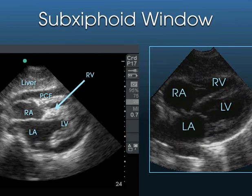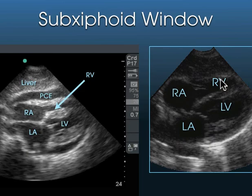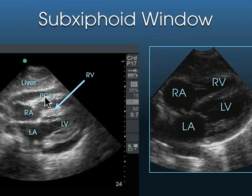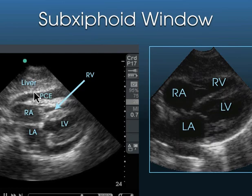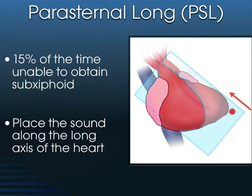In the sub-xiphoid view, here's the liver, and then we can see the right ventricle and then the left ventricle. Here's the right atrium and here's the left atrium. The right side of the heart is closer to the liver, whereas the left side is further down into the body. A pericardial effusion is seen as a separation between the anterior pericardium and the myocardium, and it wraps all the way around, including the posterior region. About 15% of the time, because some patients have small livers or other issues, it's really difficult to obtain a sub-xiphoid view.